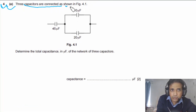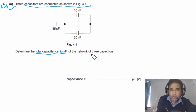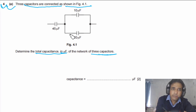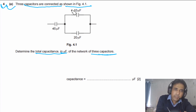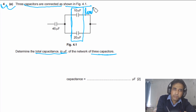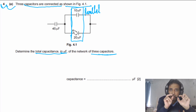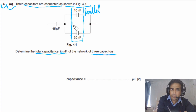Question 4 Part A: three capacitors are connected as shown in Figure 4.1. Determine the total capacitance in microfarads of the network. First, look at the network to figure out which capacitors are in parallel and which are in series. These two capacitors are connected in parallel, and their combined capacitance is connected in series with the third one.